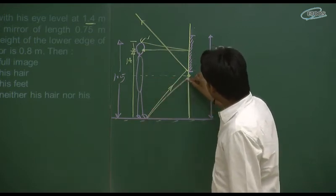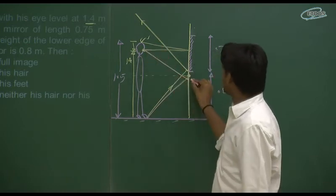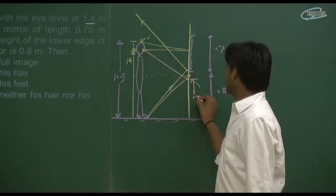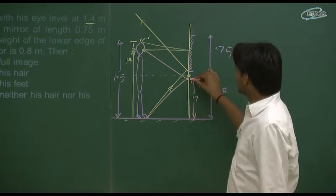If the ray is reflected here, then the ray is reflected in the eyes. And the height of this is 0.7. But the mirror is 0.8.